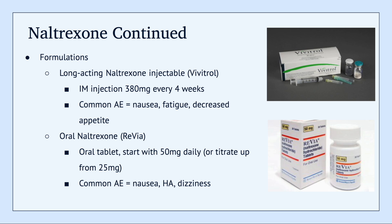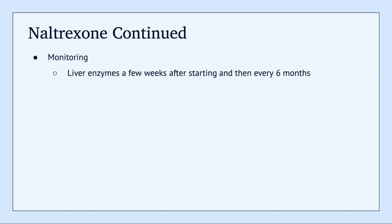There are two main formulations of naltrexone available. There's the long-acting naltrexone injectable, and then there's also the oral option. The long-acting injectable is known as Vivitrol — this is an IM injection of 380 milligrams every four weeks. Some common adverse effects are nausea, fatigue, and decreased appetite. The oral naltrexone is known as Revia. You can start with 50 mg daily, or titrate up with 25 milligrams — generally it's a better idea to start with 25 milligrams to avoid GI side effects. Common adverse effects include nausea, headache, and dizziness. It's important to get liver enzymes a few weeks after starting naltrexone, and then every six months after that.